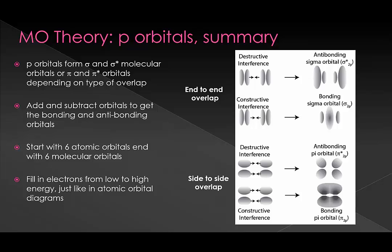As a quick summary: we have three different p orbitals. When you form bonds, the first one overlaps end on end, which gives a sigma bond. The other two orbitals overlap side on side, and that has a different symmetry — we call that pi symmetry. Notice that we still have a star for antibonding orbitals and subscripts that tell us where the orbitals originally came from. In total, we started with six atomic orbitals — three p's from each atom — and ended with six molecular orbitals.